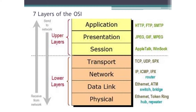Interestingly enough, the data link portion of this transmission is constantly changing as it goes from your local area network to your service provider's wide area network, to the other service provider's wide area network, to the local area network of the receiving host. It will constantly change because it needs to get through those individual networks, and all of that is going to be done on a lot of different physical media.